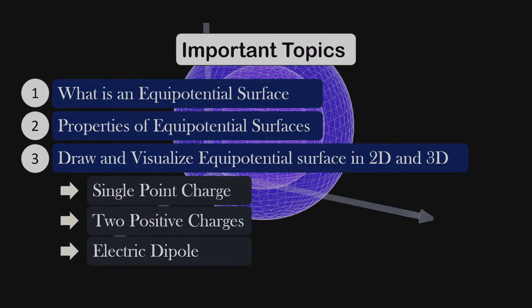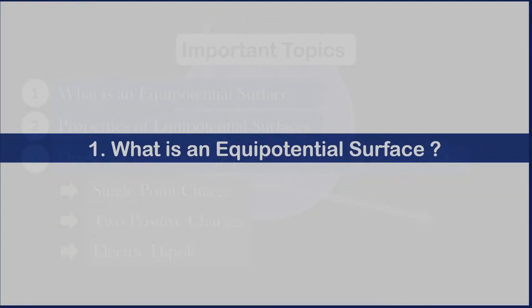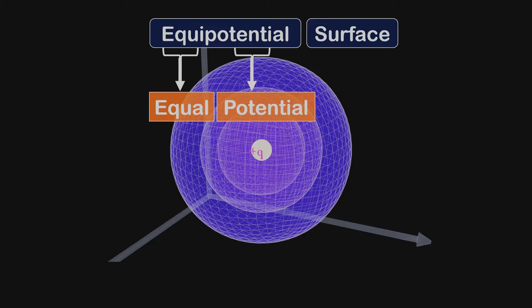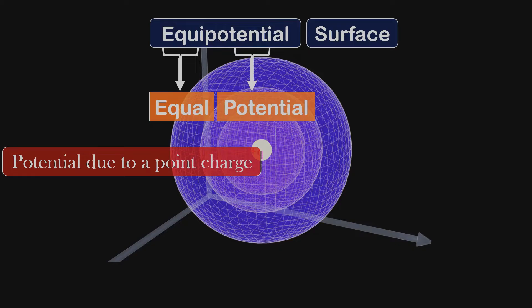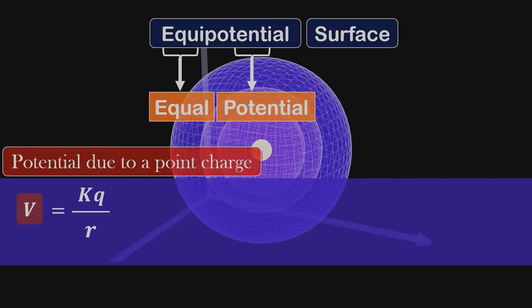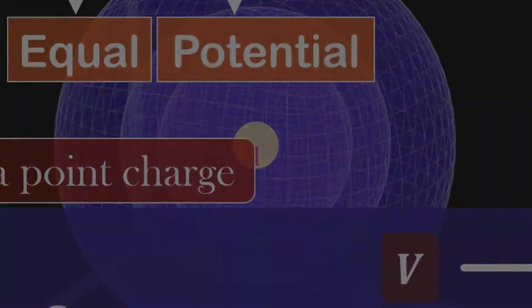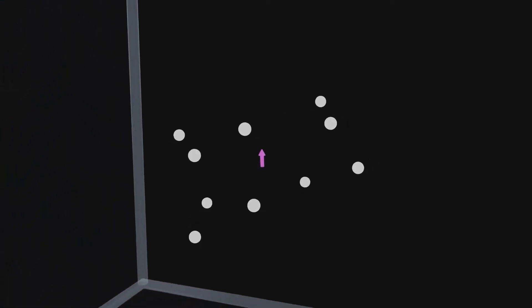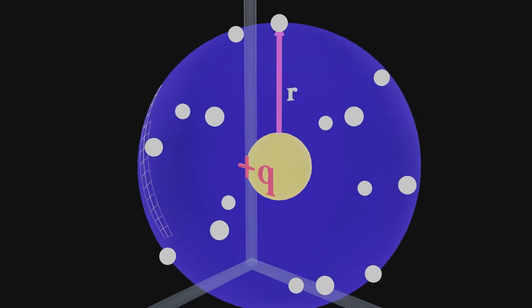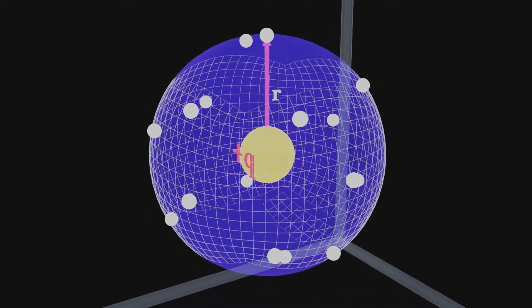Let's get started by first understanding what is an equipotential surface. The term equipotential gives us a partial definition, which essentially means equal potential. In our previous videos, we have seen that the formula for potential due to a point charge at a certain position is given by V equals kq divided by r, where r is the distance between that position and the point charge. So if the distance remains constant, the potential will also remain the same. Keeping this in mind, if we consider a number of points at a fixed distance from a point charge, all these points will have the same potential. By connecting all these points, we obtain a spherical equipotential surface for the point charge.